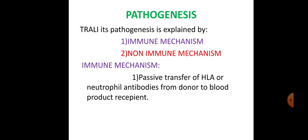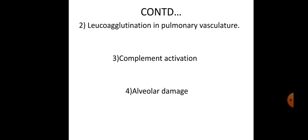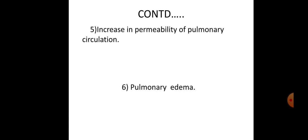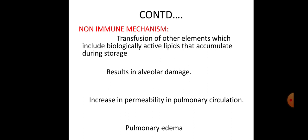TRALI is explained by immune and non-immune mechanisms. In the immune mechanism, passive transfer of HLA or neutrophil antibodies from donor blood product to recipient results in neutrophil aggregation in the pulmonary vasculature, complement activation, and alveolar damage. Alveolar damage increases permeability of pulmonary circulation, resulting in non-cardiogenic pulmonary edema. In the non-immune mechanism, transfusion of biologically active lipids that accumulate during storage similarly causes alveolar damage, increased permeability, and pulmonary edema.